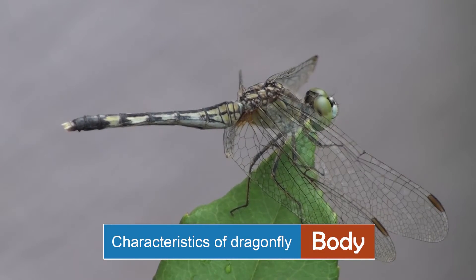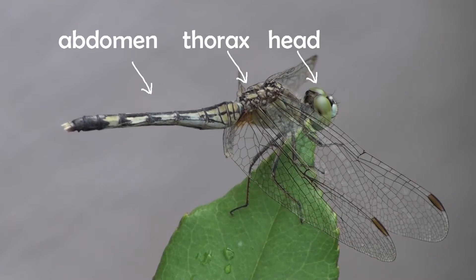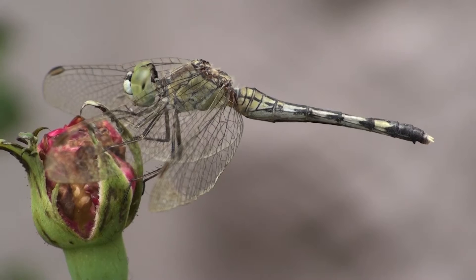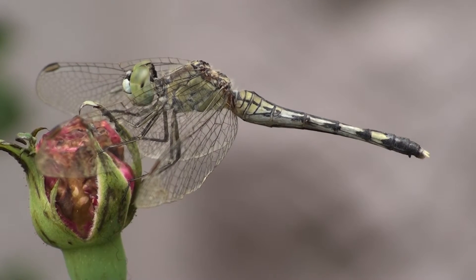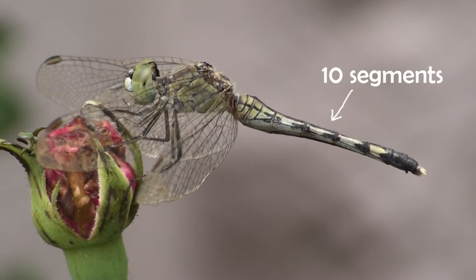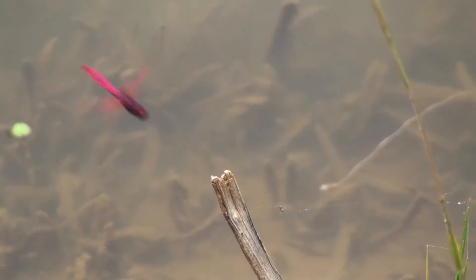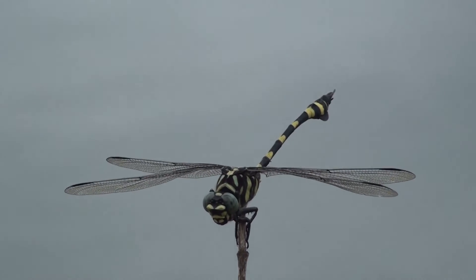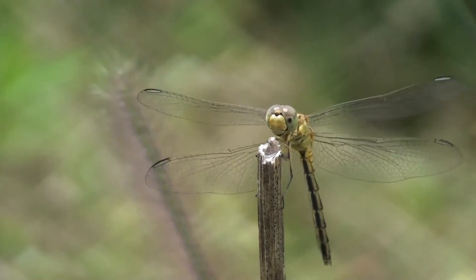The body of the dragonfly consists of the head, thorax, and abdomen. The eyes take up most of the head. The thorax is approximately two to three times the size of the head, and the wings and legs are attached to the thorax. The abdomen consists of 10 segments and is long and slender. Colors of different dragonfly species range from metallic green and blue to dark brown and black, with blue and green spots.